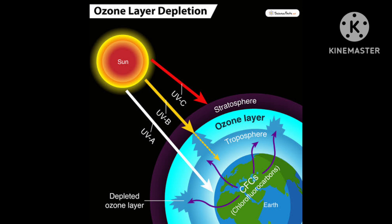The ozone formed in this reaction reacts rapidly with NO to regenerate NO₂. NO₂ is a brown gas, and at sufficiently high levels it contributes to haze. The reaction is: NO + O₃ → NO₂ + O₂.